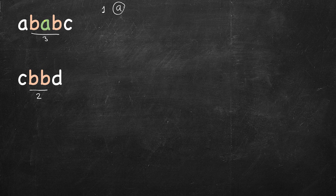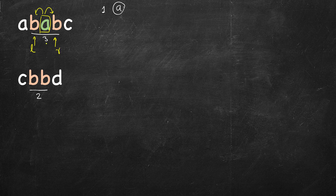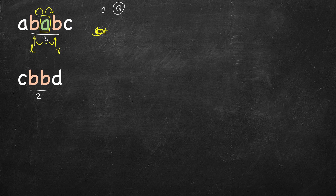There is always a center. If it's odd length, the center will be an actual character. We start from this center, go one step left and one step right — we have two pointers, l to the left and r to the right. We can start both l and r from the same character. If l equals r, we increment the count and move l left and r right. We can also compute the length by doing r minus l minus 1.